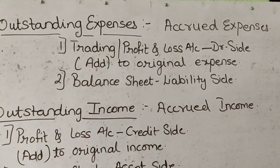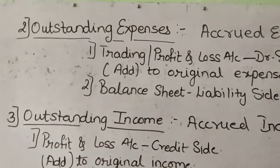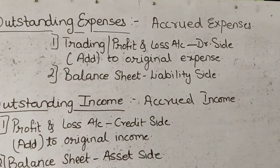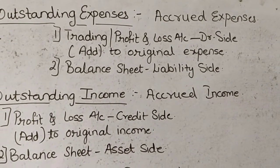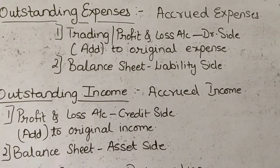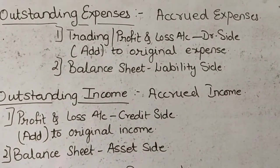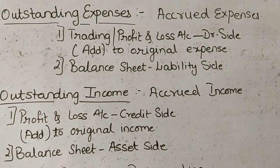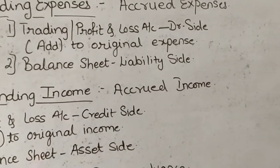The second and most important adjustment is regarding outstanding expenses. Outstanding expenses are those expenses which are related to your current year but remain unpaid during the year. If you have not paid any expenses related to the current year, such expenses become outstanding expenses. They are also called as accrued expenses, meaning collected or accumulated expenses.